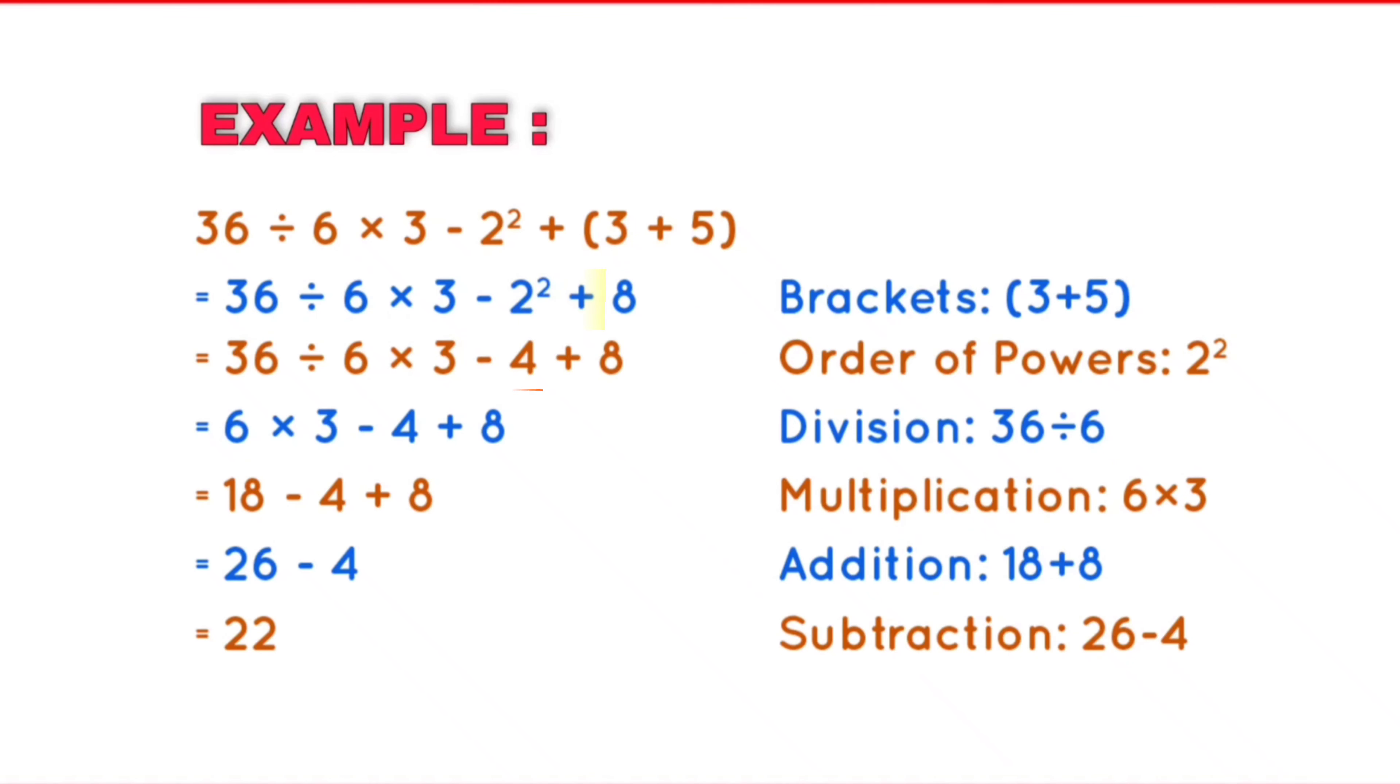After that we do division and multiplication: when 36 is divided by 6, we get 6. Now 6 is multiplied with 3, we get 18. Now 18 is added to 8, we get 26, and 4 is subtracted from this 26.